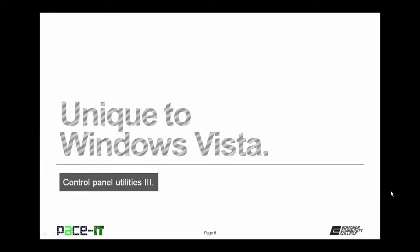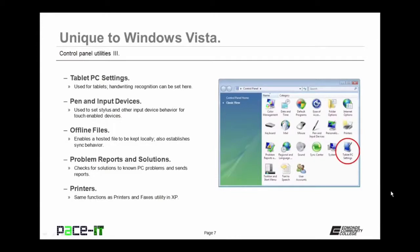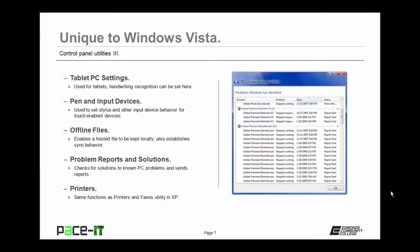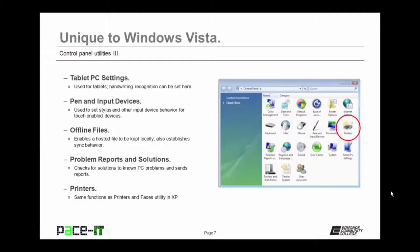For utilities unique to Windows Vista: the Tablet PC Settings utility is used for tablets and handwriting recognition; the Pen and Input Devices utility sets stylus and other input device behavior for touch-enabled devices; the Offline Files utility enables a hosted file to be kept locally and establishes synchronization behavior for when it goes back online; and the Problem Reports and Solutions utility checks for solutions to known PC problems and sends reports to Microsoft.